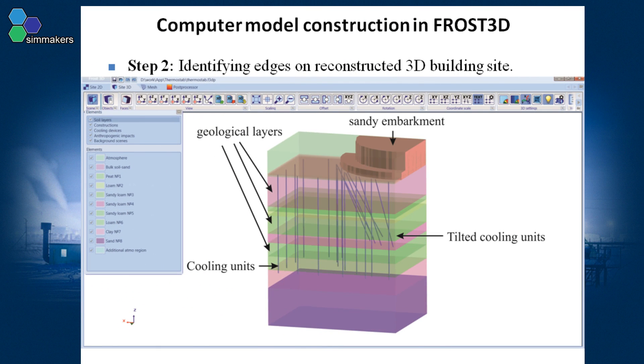In the second step, the reconstruction of 2D contours in 3D geometry is performed. There is a sandy embankment at the top of the modeling region where the building with relatively warm foundations is located. For each soil layer, the heat capacity and thermal conductivity in thawed and frozen states and phase transition temperatures are set.